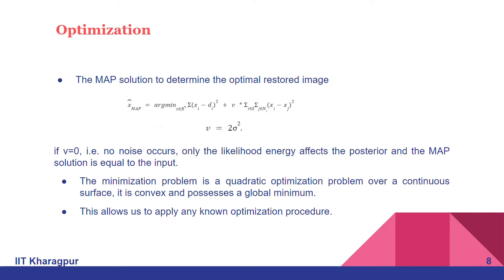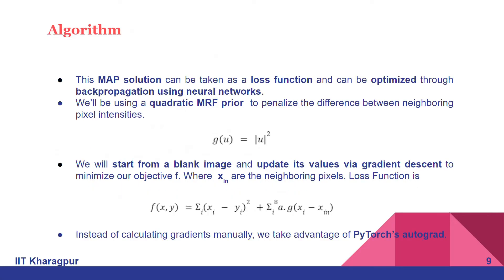The minimization problem is a quadratic optimization problem over a continuous surface. It is convex and possesses a global minimum. So this allows us to apply any known optimization procedure.